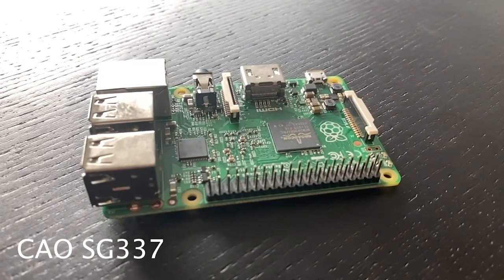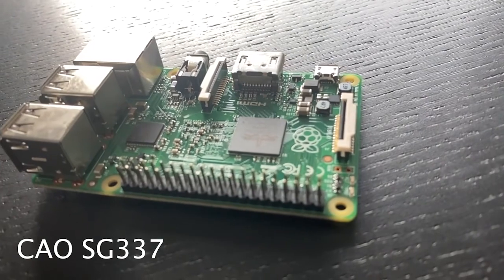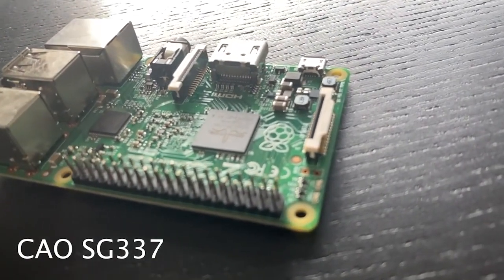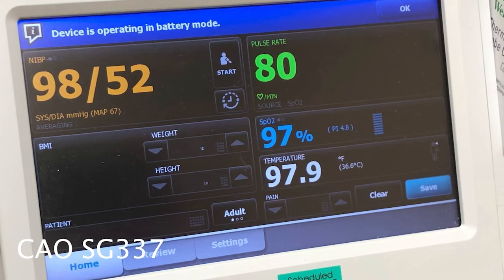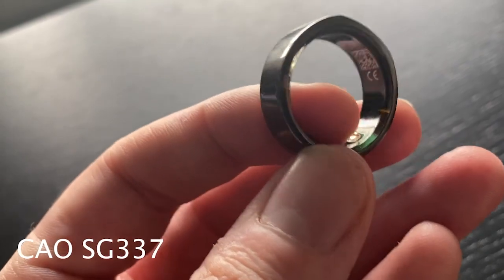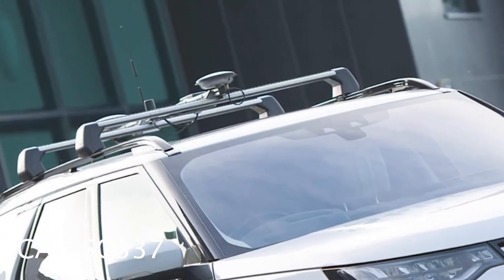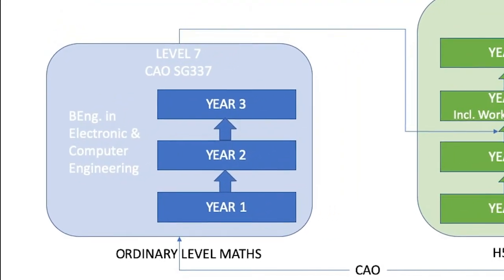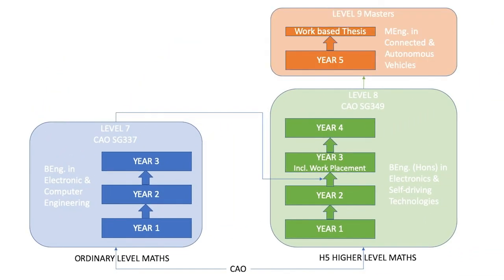If you are interested in technology or engineering but are not doing higher level maths, why not consider our level 7 in Electronic and Computer Engineering. This is a three-year program that looks at the design and development of embedded electronic systems - the medical devices that keep us healthy, the consumer devices that keep us entertained, or the controlled systems that keep us safe on the road. You can then progress onto the level 8 in Electronics and Self-Driving Technologies and from there to the masters. Check out the link below for more information.